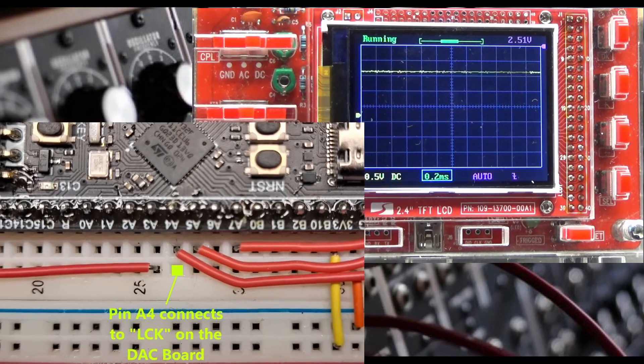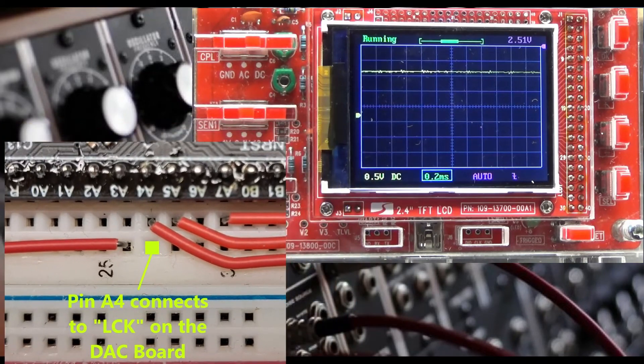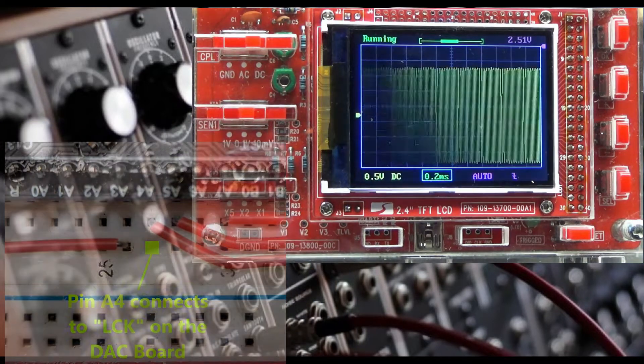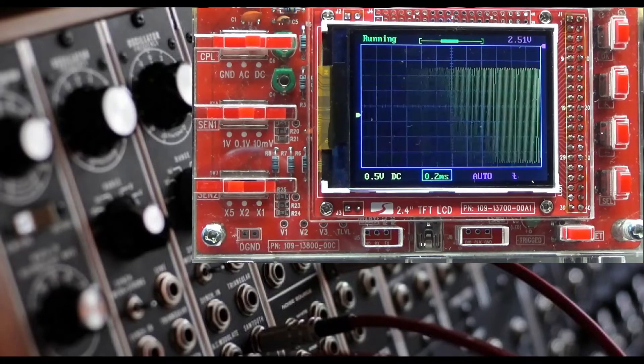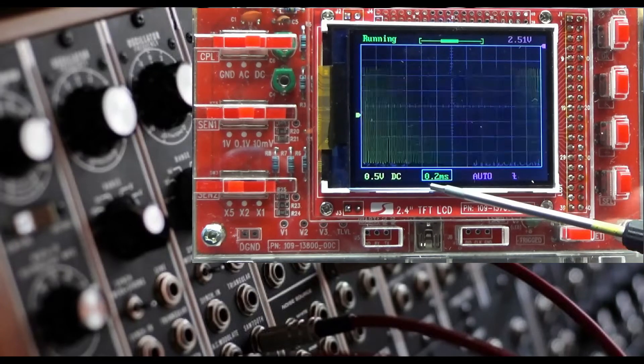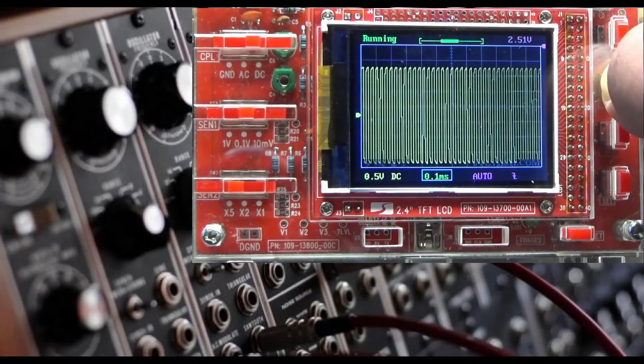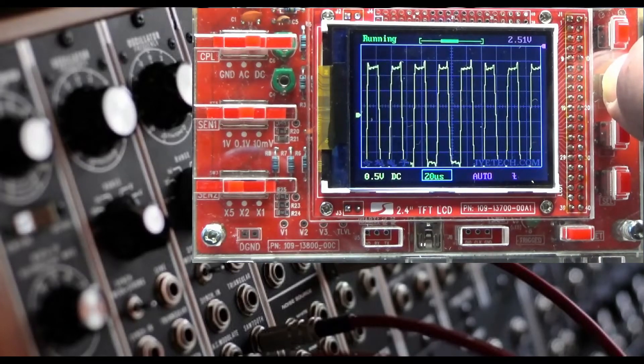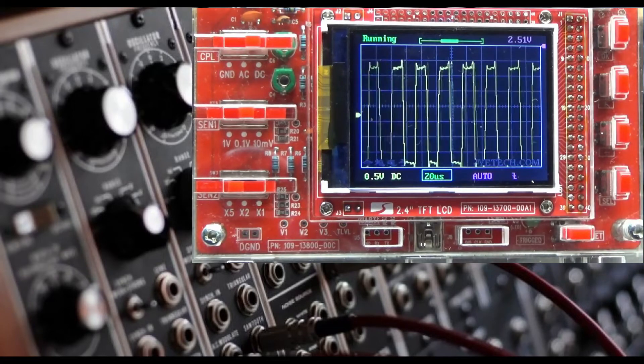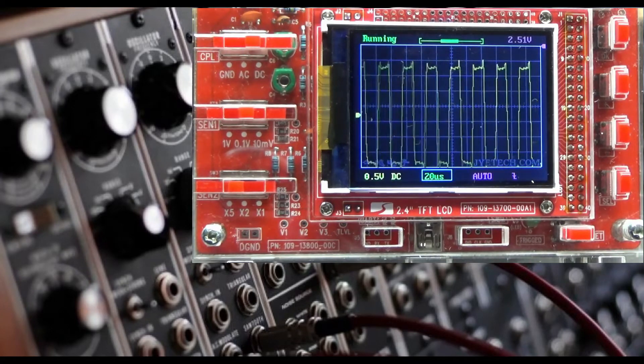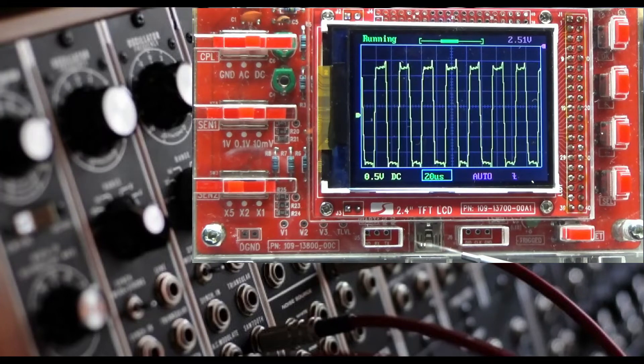Now we're going to move our test lead over to pin A4 on the black pill. A waveform like this should show up. Looking at this value right here, being highlighted, we can press a button to go up so we can see the square wave that is being applied on that pin. This is the word clock signal from our i2s interface.